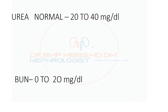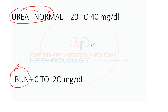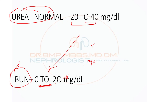In the blood, both are nitrogenous waste products. Urea is the end product of the urea cycle from ammonia from protein metabolism. If you measure only the nitrogen, that is called blood urea nitrogen. The normal value of urea in the blood is 20 to 40 mg/dL; simply divide by two to get the BUN value, which is approximately 10 to 20 mg/dL. Grossly, there is no clinical difference — both measure nitrogenous waste product in the blood.